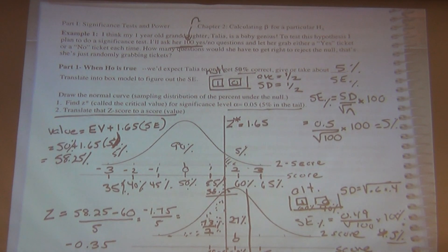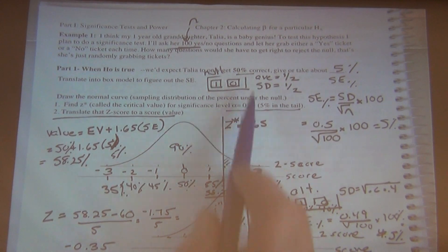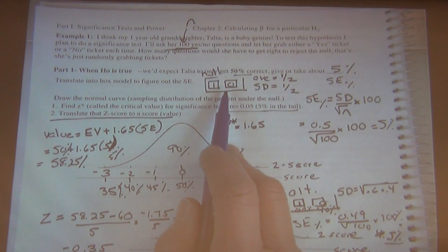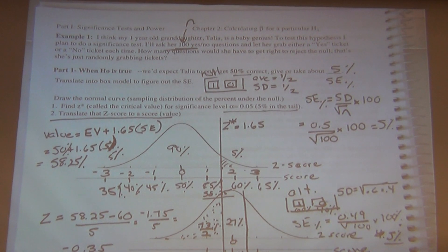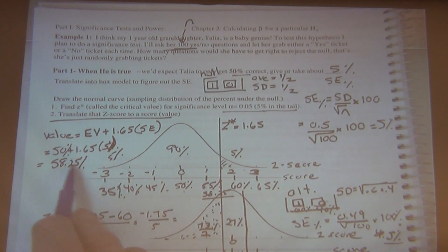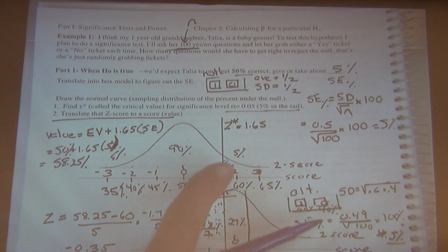So the idea was that we're going to do this significance test. We assume the null is true — that she's just guessing. If she's just guessing, we'd expect her to get 50% right, give or take 5%. That's the sampling error — the standard error of the percent under the null. This is equivalent to flipping a coin a hundred times. You'd expect to get 50 heads, but you're not always going to get exactly 50 heads. If we drew the probability histogram and smoothed it out, it would look just like the normal curve, with 50% in the middle.